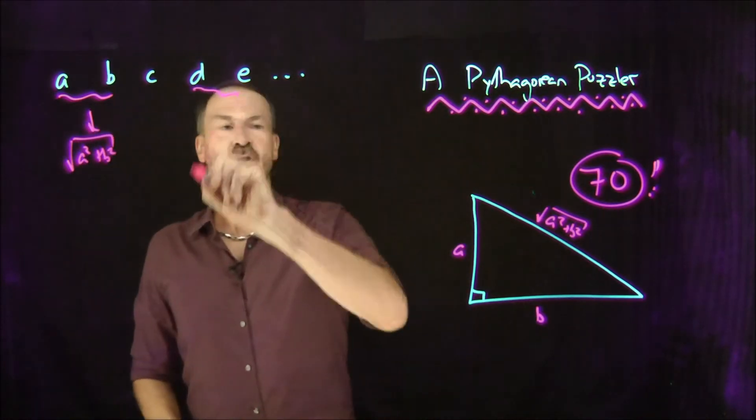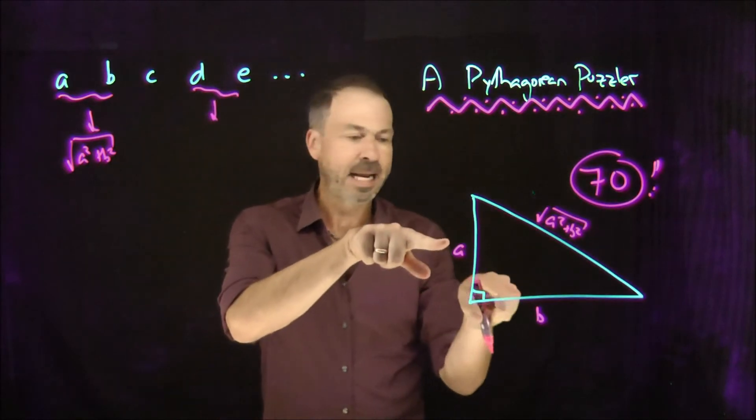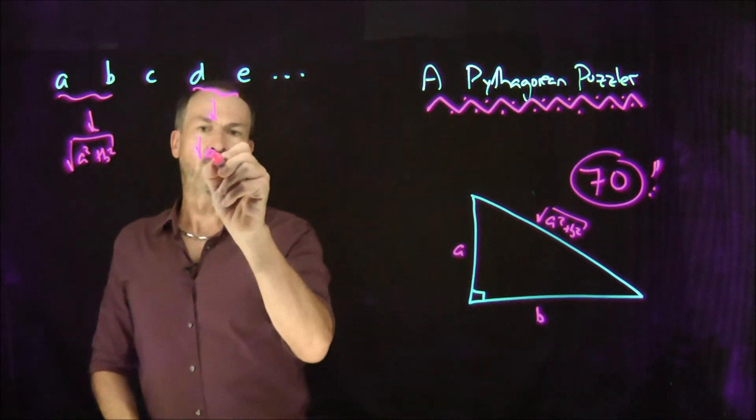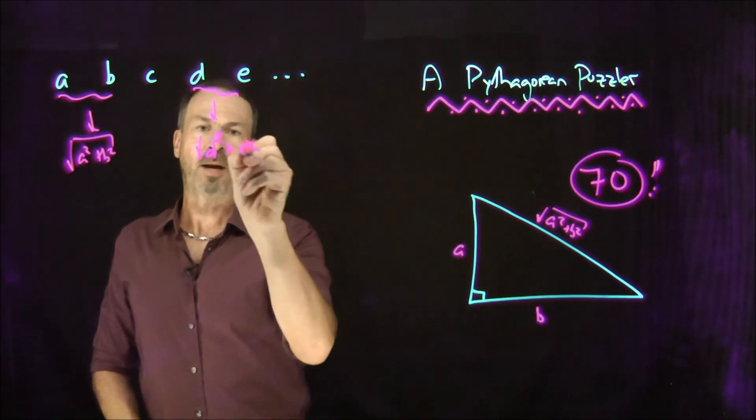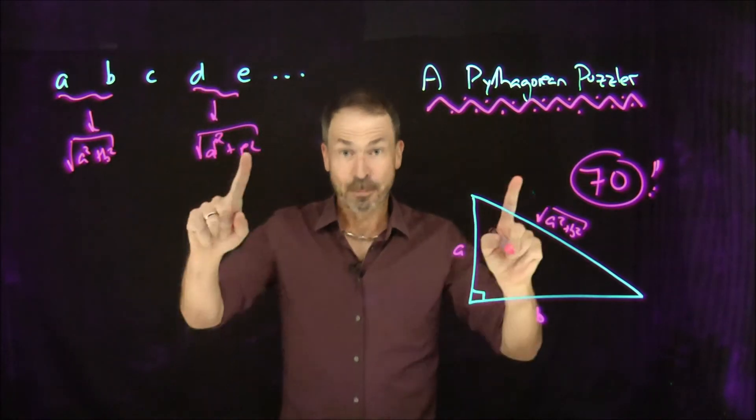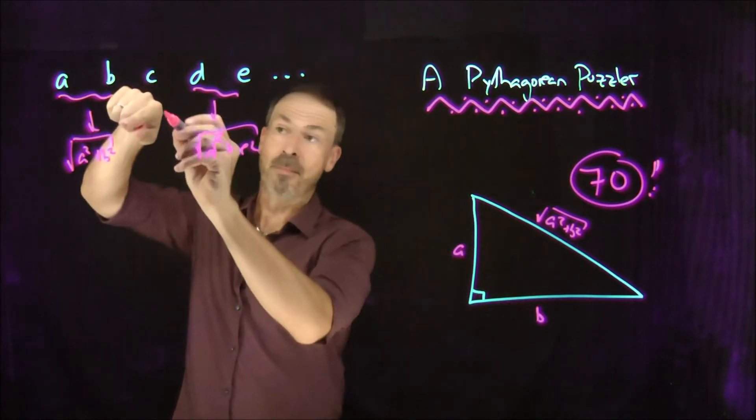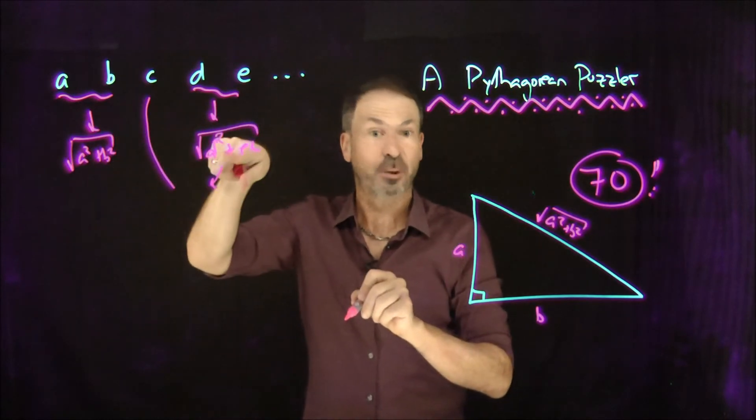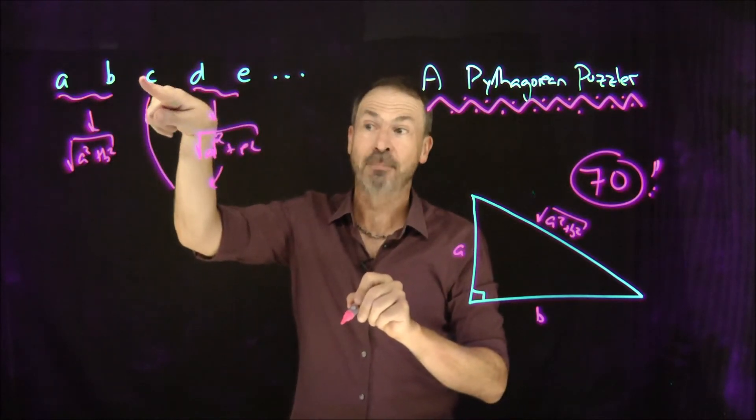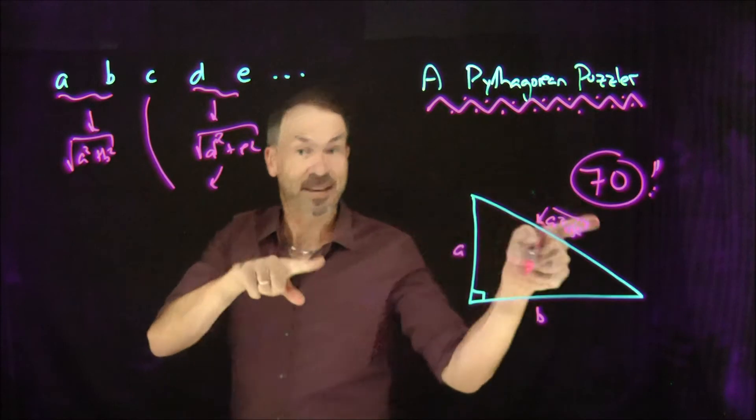If I do it over here, later choose d and e, I get the square root of d squared plus e squared. Great. At some point as you play, you might use an old number and a new number. So what I have to do is square that, square that, and add them. c squared plus d squared plus e squared, and then square root of.